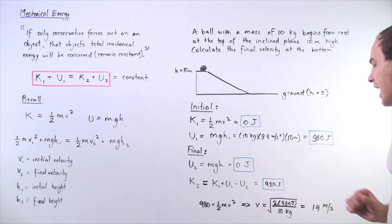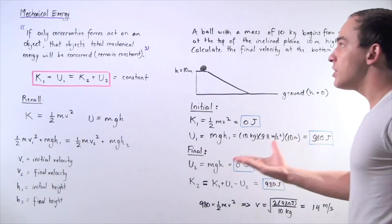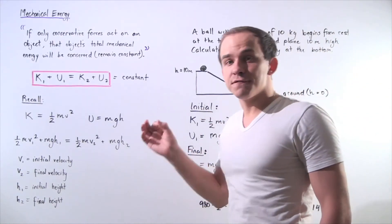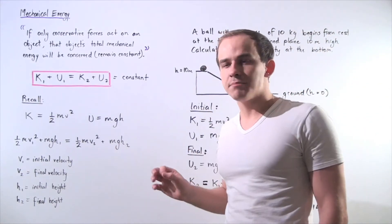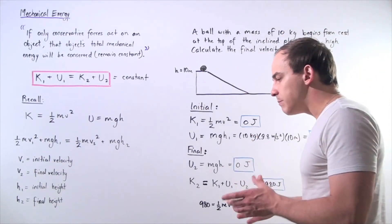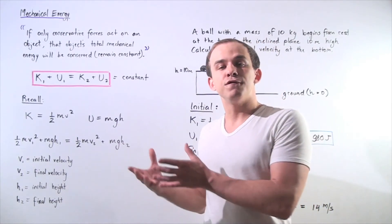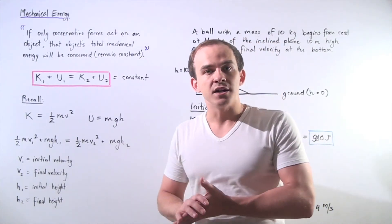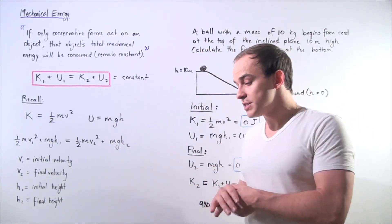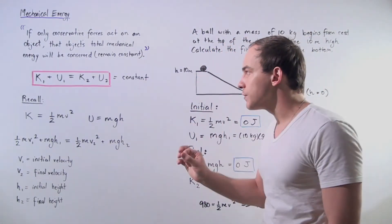Solving for our velocity, we find the velocity to be 14 meters per second. We can see how this mechanical energy conservation concept can be very useful, because whenever we talk about conservative systems with only conservative forces acting on our objects, our total mechanical energy is always conserved.